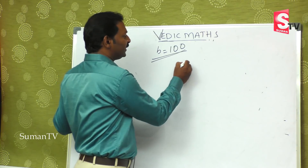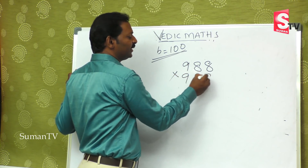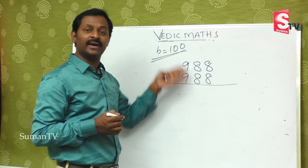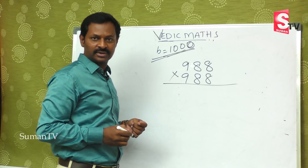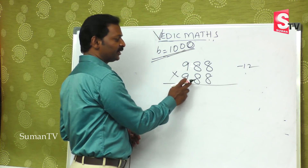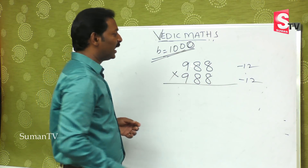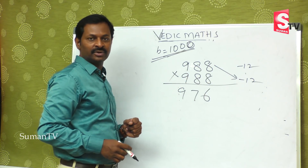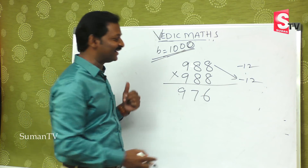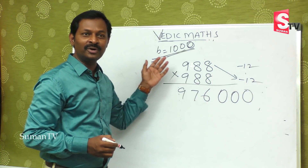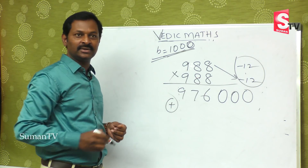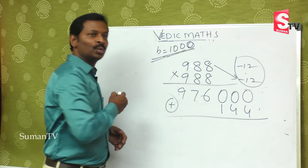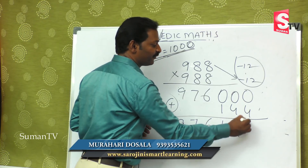Suppose the number is 988 multiplied by 988. This number is close to 1000, so the base is 1000. 988 is less than 1000 by 12, so minus 12. Here also minus 12. 988 plus 12 makes 1000, so the first step gives 976. Since the base is 1000, we put 3 zeros. Then minus into minus is plus, so 12 times 12 is 144. Therefore 988 times 988 equals 976144.